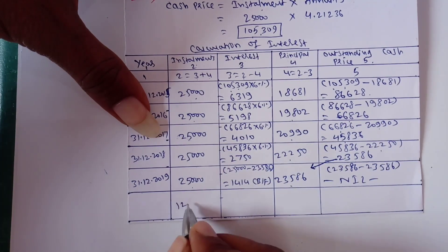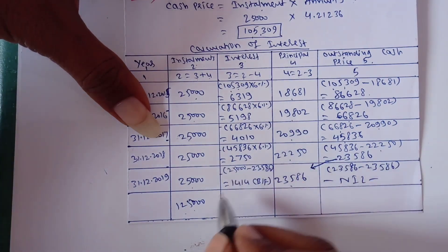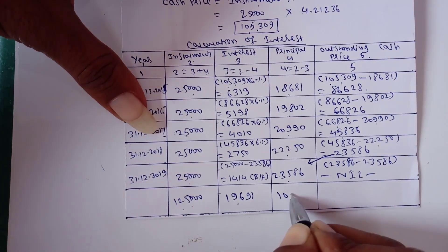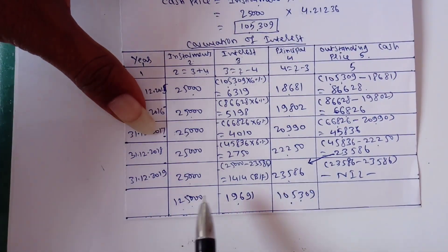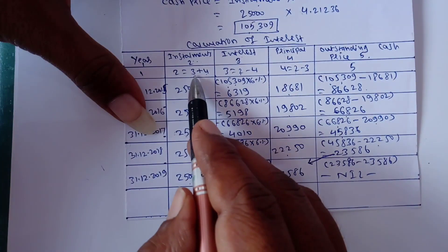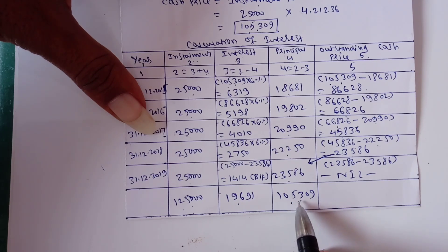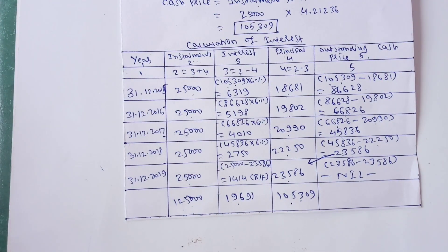Now we make the totals. Total installments = Rs.1,25,000. Total interest = Rs.19,691. Total principal = Rs.1,05,309. We can cross-verify: interest plus principal = Rs.19,691 + Rs.1,05,309 = Rs.1,25,000, which matches the total installments. This is the solution to the problem. Problems are very simple. If you have any doubts, please feel free to ask. Thank you.